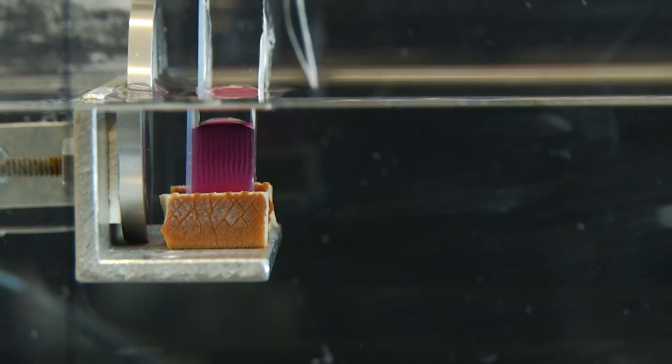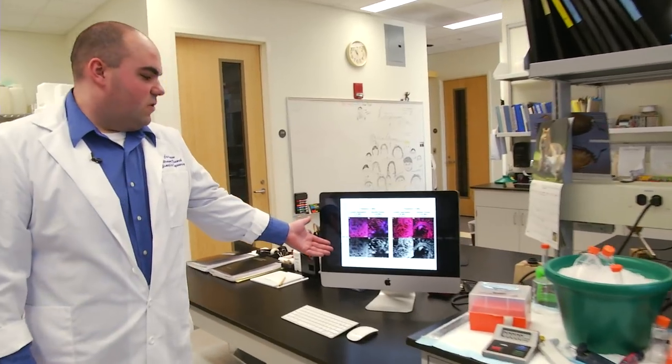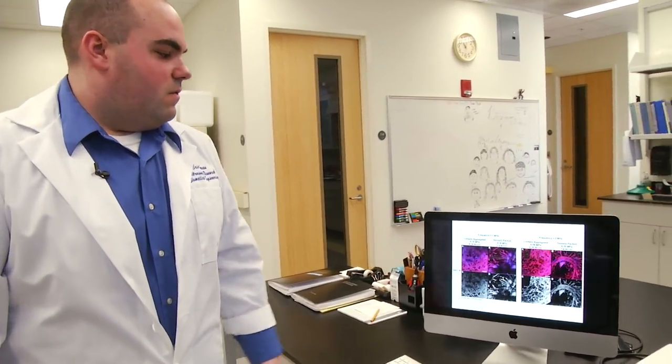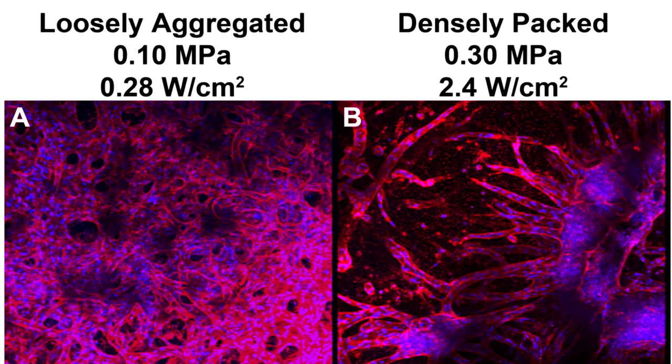When we use endothelial cells, which are the cells that form blood vessels in the body, we have shown that they form vessels as shown here. So we can make both capillary-like networks as well as thicker branching vessels.